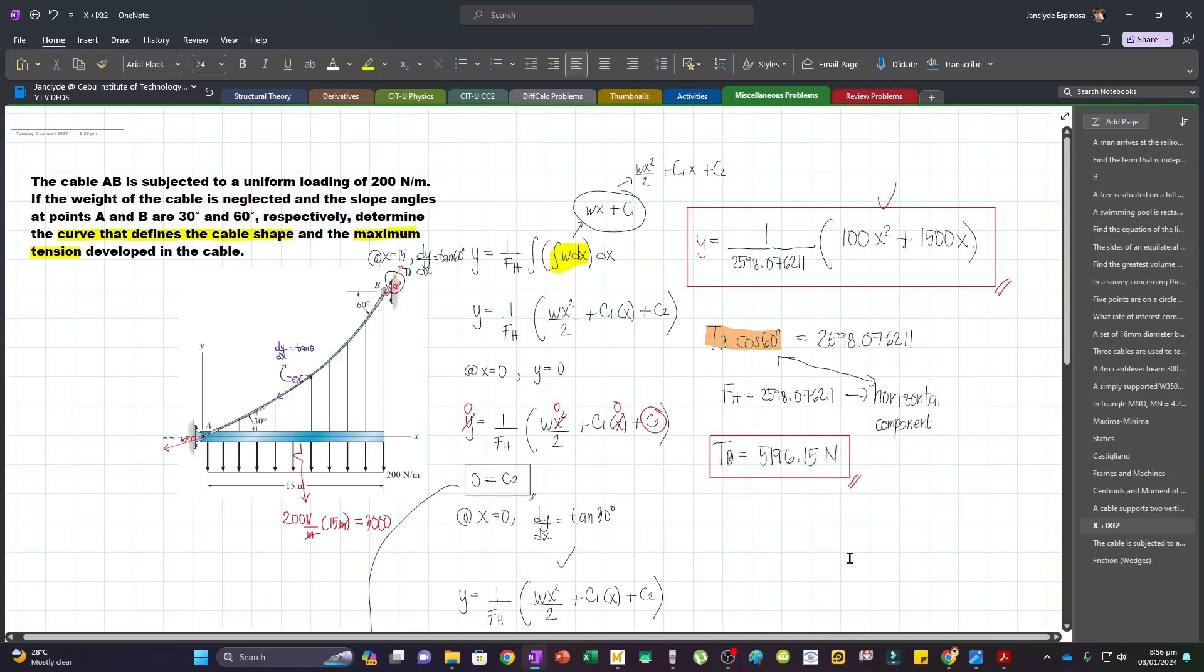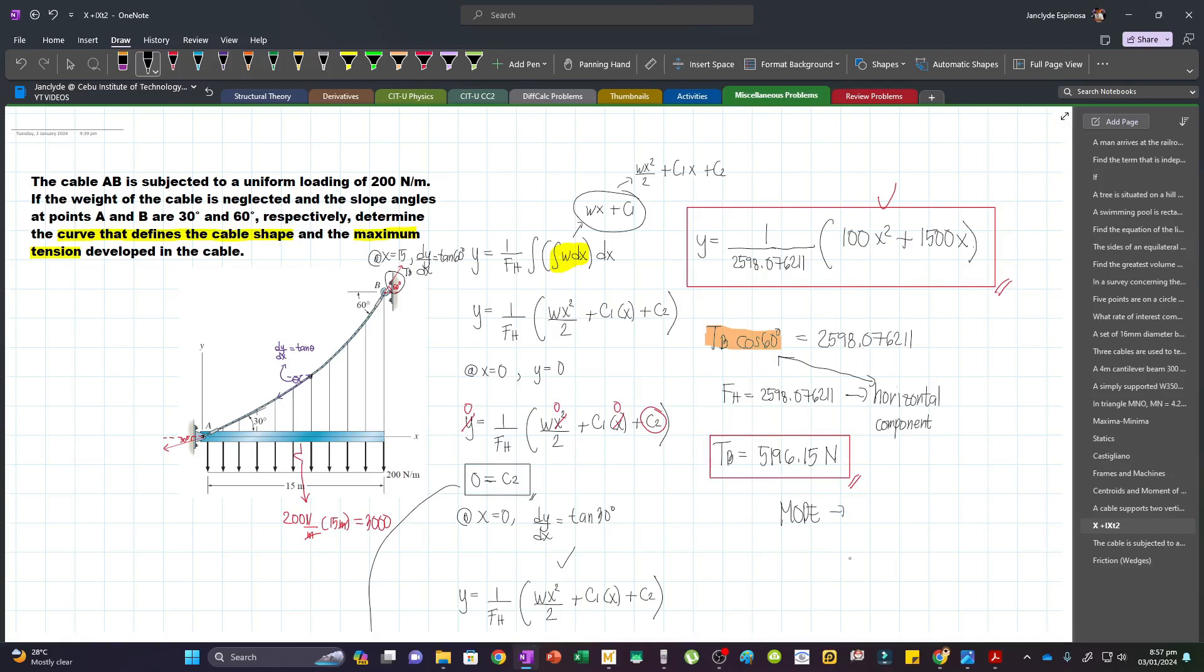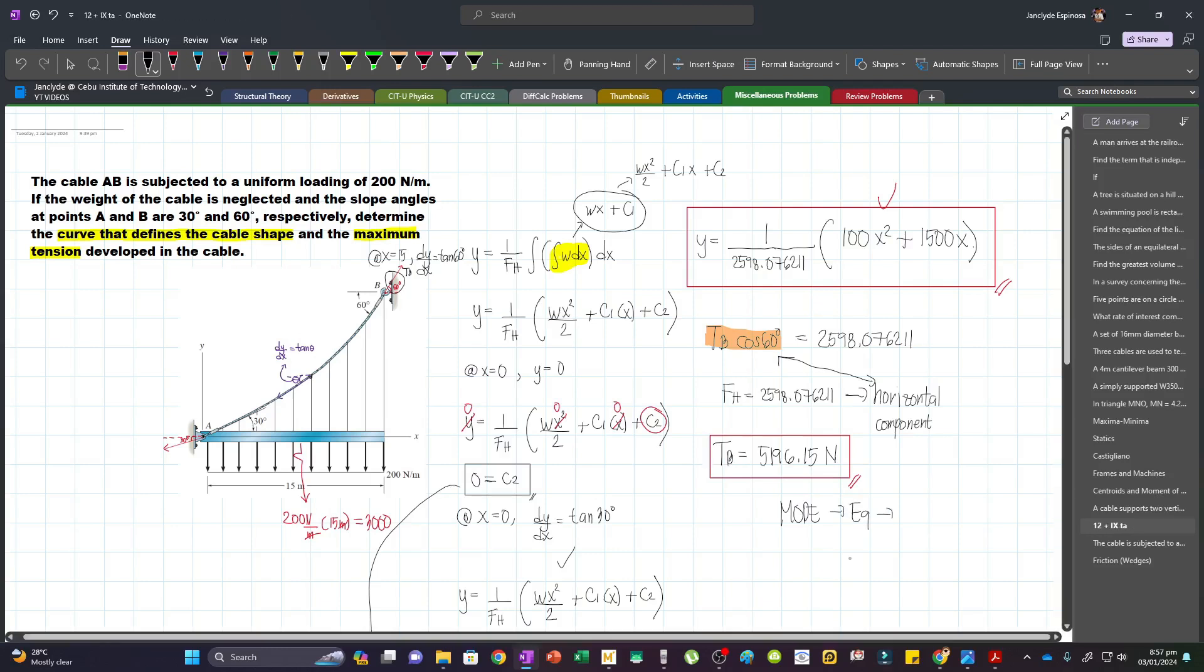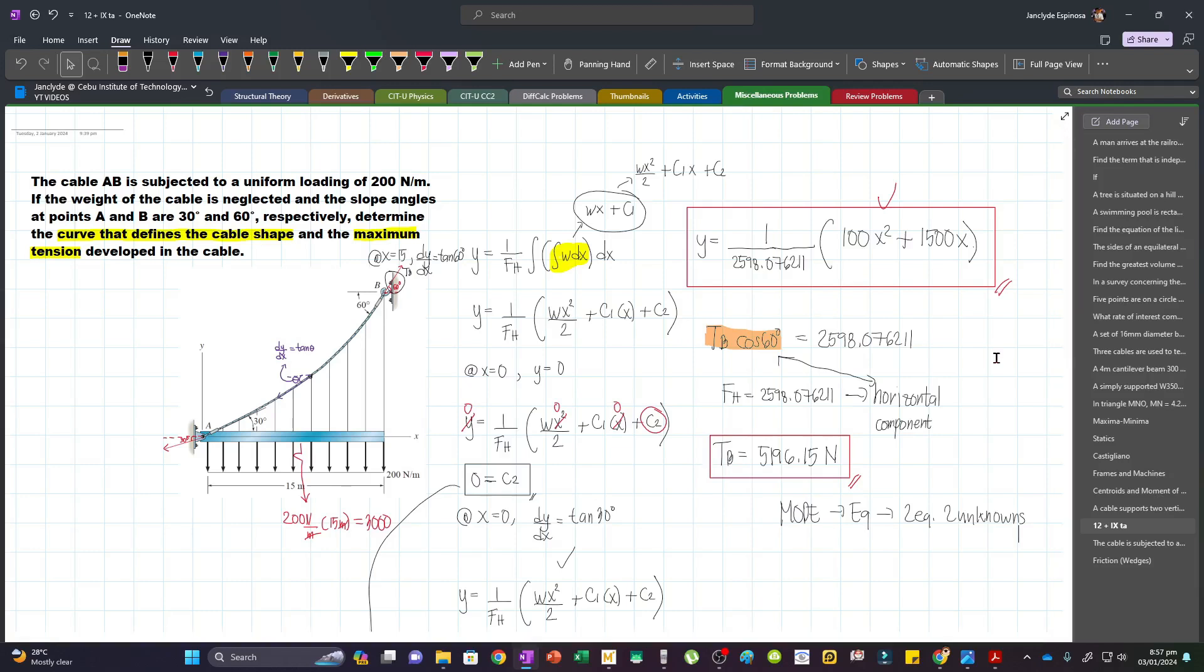The first step is to go to mode and then go to equation. And then you have to pick two equations, two unknowns. So what we are essentially doing here is we are summing up forces horizontal and vertical.